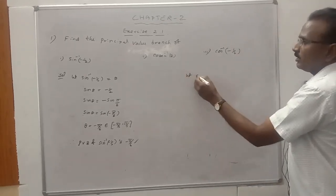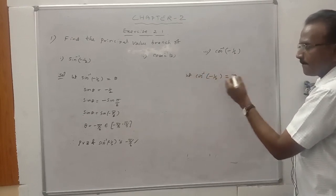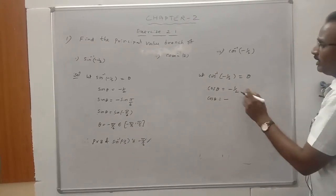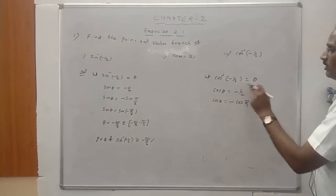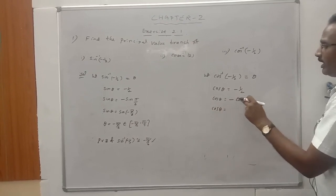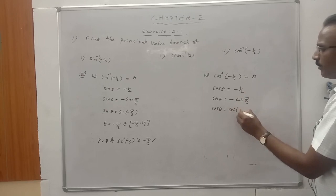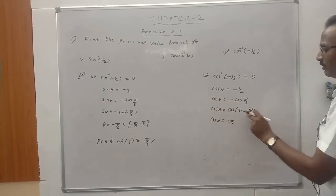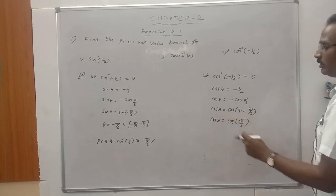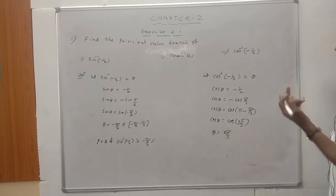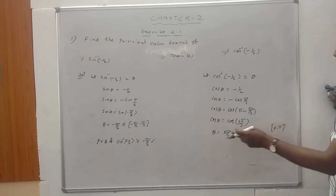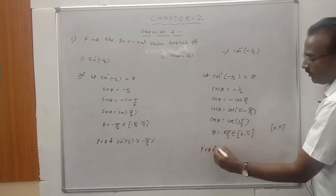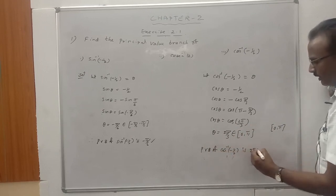Third question: cos inverse of minus 1 by 2. Let cos inverse(minus 1 by 2) equal theta. By definition, cos theta equals minus 1 by 2. Since cos(pi by 3) equals 1 by 2, and cos(pi minus pi by 3) equals minus cos(pi by 3), we get cos theta equals cos(2pi by 3). Comparing, theta equals 2pi by 3. Since 2pi by 3, which is 120 degrees, lies in the closed interval 0 to pi, the principal value branch of cos inverse(minus 1 by 2) is 2pi by 3.